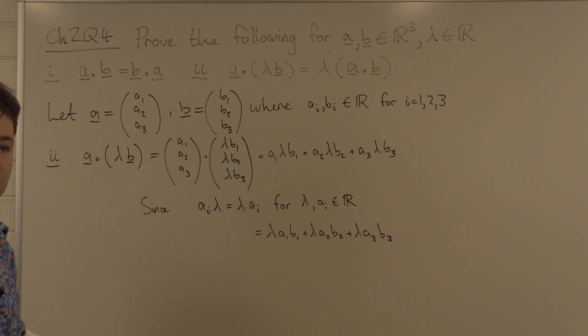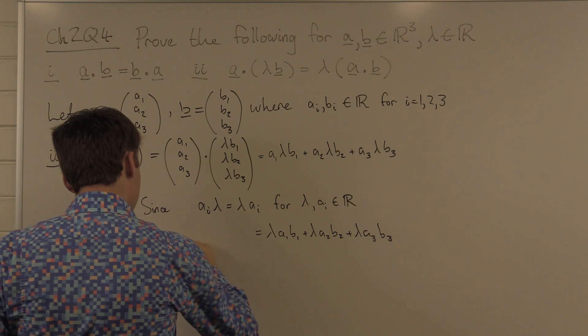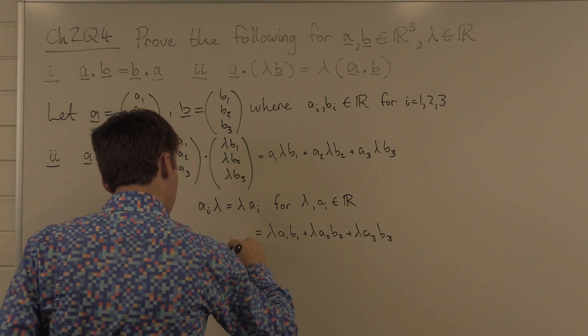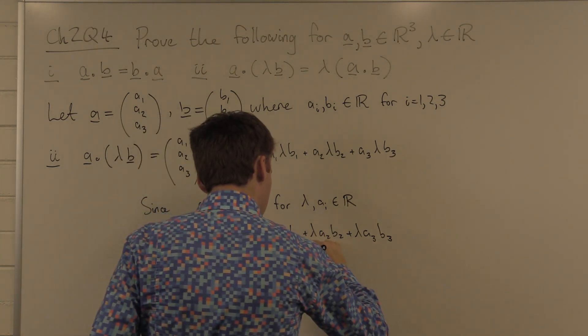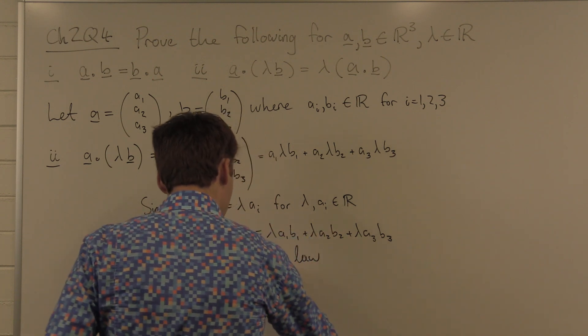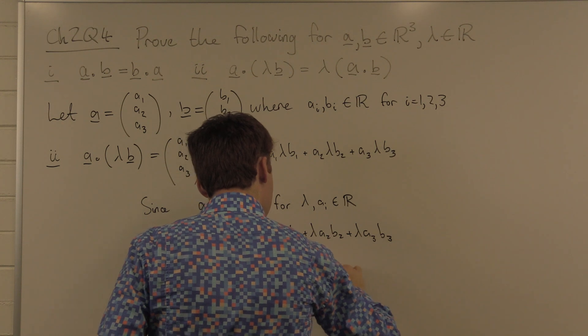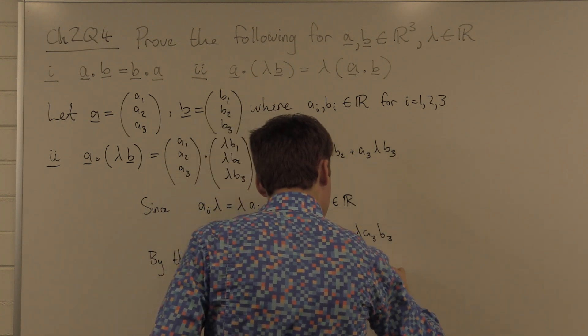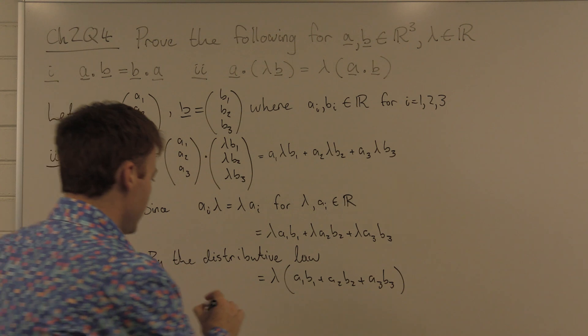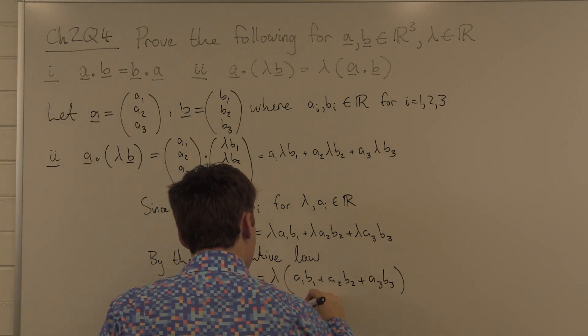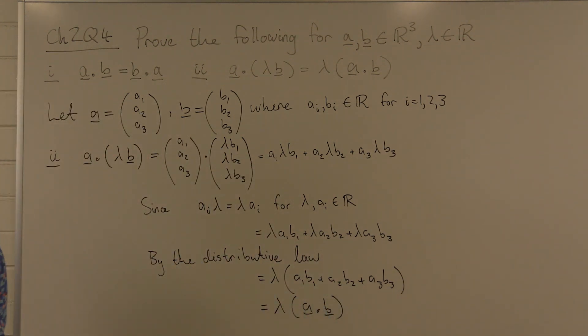Now, I want to use another property of the real numbers. This one's called the distributive law. This is equal to lambda times A1 B1 plus A2 B2 plus A3 B3, which is lambda A dotted with B. And that concludes part two.